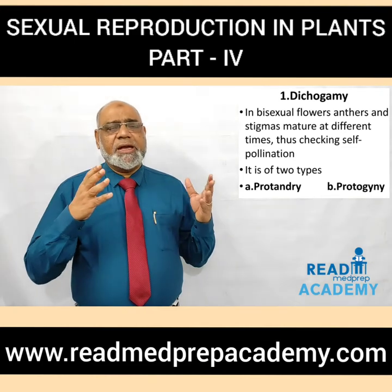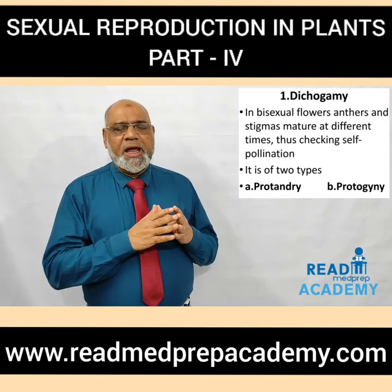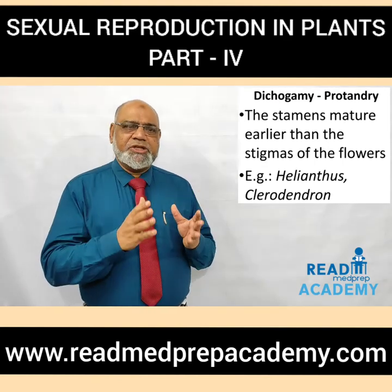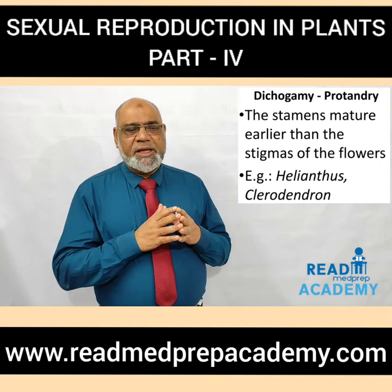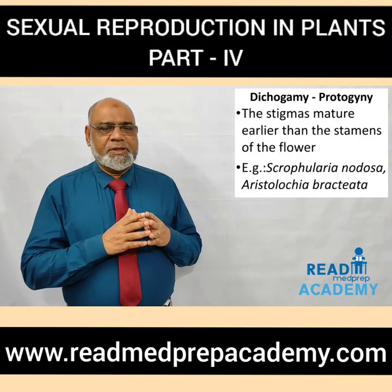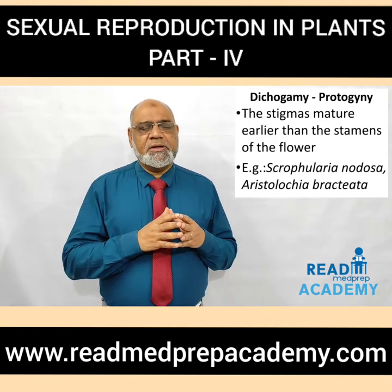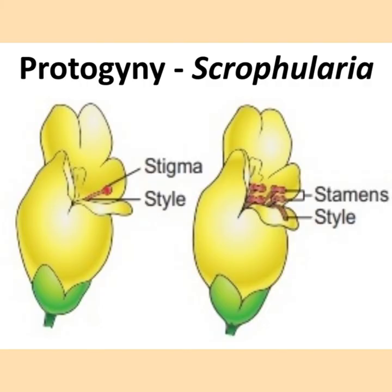In dichogamy, the bisexual flowers' anthers and stigma mature at different times, thus checking self-pollination. Dichogamy is of two types: protandry and protogyny. In protandry, the stamens mature earlier than the stigmas of the flowers. Examples: Helianthus, Clerodendrон. Here you can see the stamens maturing earlier than the stigma, and on the right side the style which matures after the stamens. In protogyny, the stigmas mature earlier than the stamens. Example: Scrophularia nodosa, Aristolochia bracteata. Here you can see the stigma matures earlier and the stamens mature later.